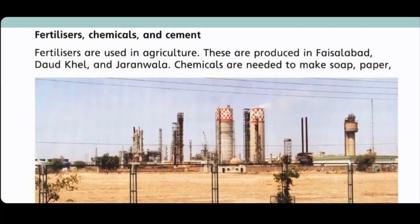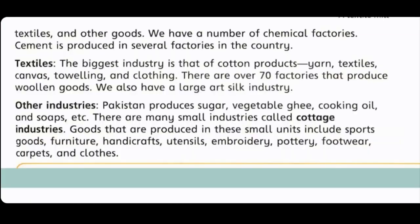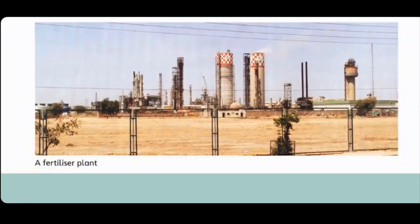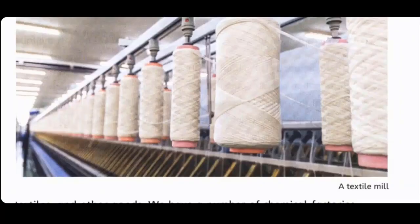Fertilizers, chemicals and cement. Fertilizers are used in agriculture; these are produced in Faisalabad, Dawat Khel and Jhanwala. Chemicals are needed to make soap, paper, textile and other goods; we have a number of chemical factories. Fertilizers خاص طور پر زراعت میں استعمال کی جاتی ہیں اور ملک میں کئی factories میں cement کی پیداوار ہوتی ہے۔